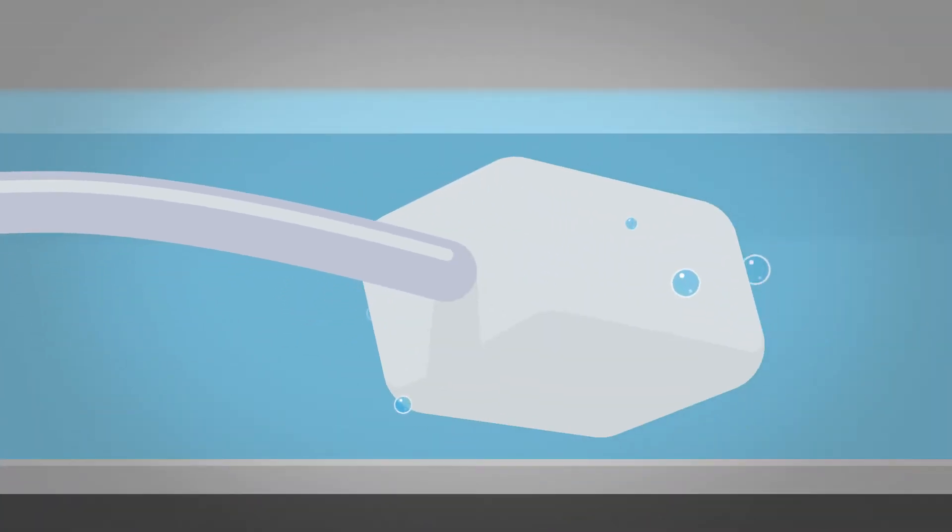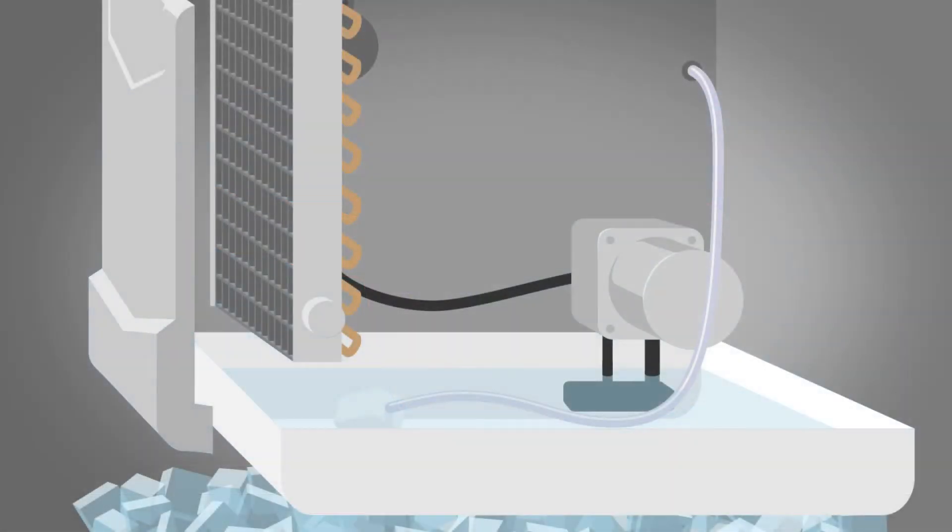Ozone is delivered to the sump through a diffuser stone. Bubbling ozone through the sump water gives the ozone an opportunity to keep the water and wetted surfaces clean. The remaining ozone off-gasses into the chiller compartment.